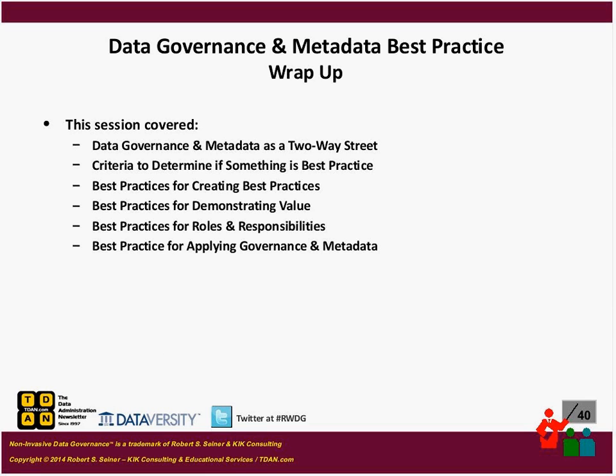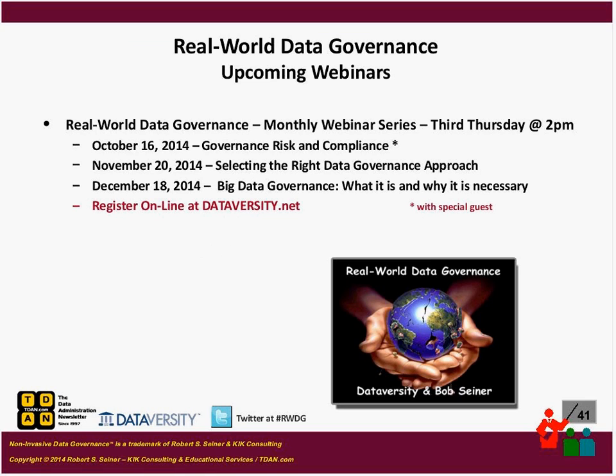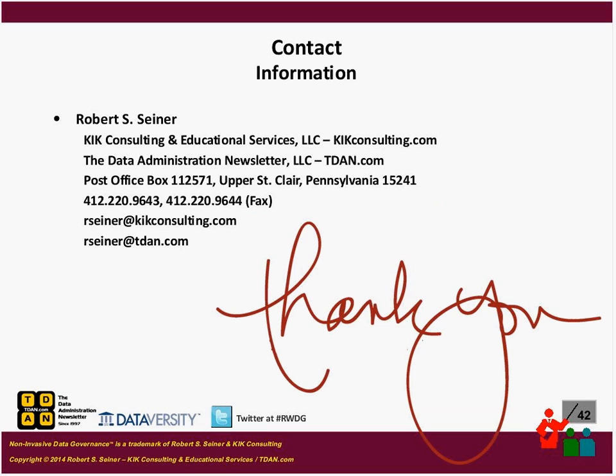To wrap up: we talked about data governance and metadata being a two-way street, criteria to determine whether something is best practice — is it practical and doable, and are we at risk if we don't achieve it — best practices for creating best practices, best practices for demonstrating value, roles and responsibilities, and applying governance and metadata to specific processes within our organization. Just a reminder of upcoming webinars in October, November, and December. And with that, I'd like to turn it over to Shannon to see if we have any questions.